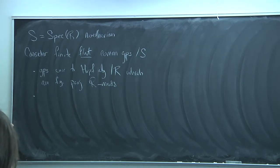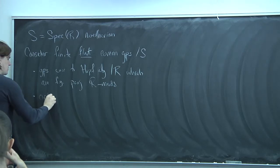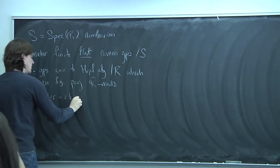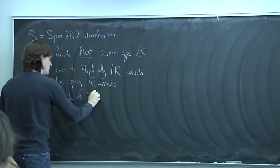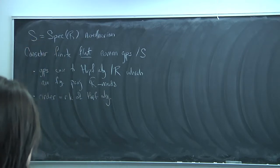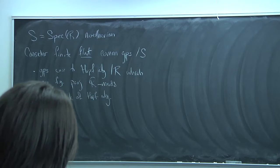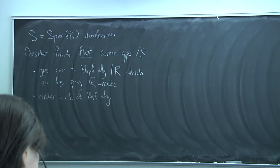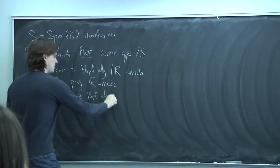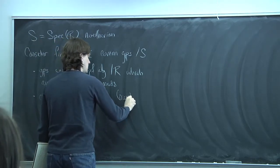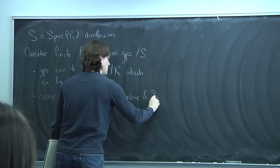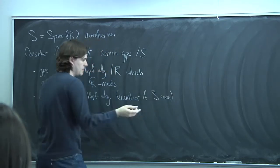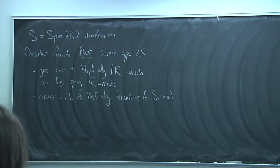You can again define the order of such a group scheme. Before we defined the dimension over the field of the coordinate ring; here we define the order as the rank of the Hopf algebra. The rank of a projective module is a locally constant function on the base, so you can think of it as a number if the base scheme is connected.